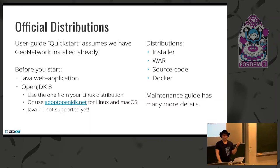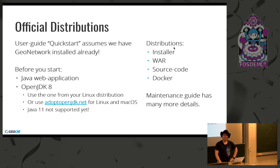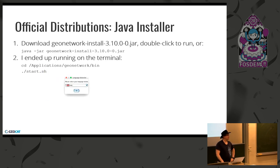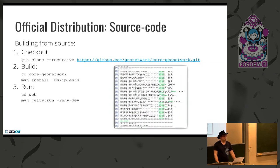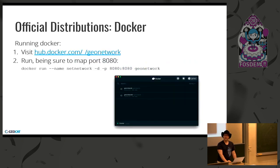Installation and setup. The quick start kind of assumed you already had a GeoNetwork. It's a Java web app using Java 8 — use one from your Linux distribution or AdoptJDK. There are a couple of installation options: an installer, WAR, source code, and Docker, but there's no guided documentation on how to use that. As I made the presentation, I documented it, so I owe the community a pull request after this. There's an amazing installer written in Java — it eventually works. You can also bring your own Tomcat application server and drop a WAR in. Source code is an official distribution, and they do have an official Docker image.